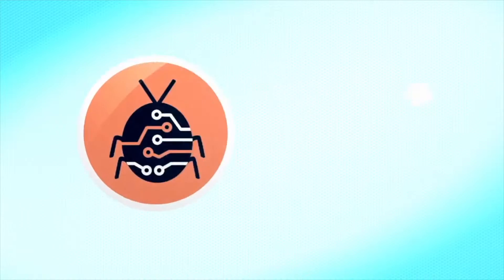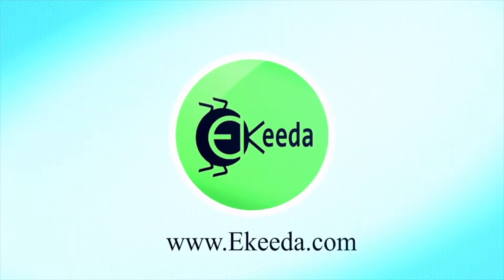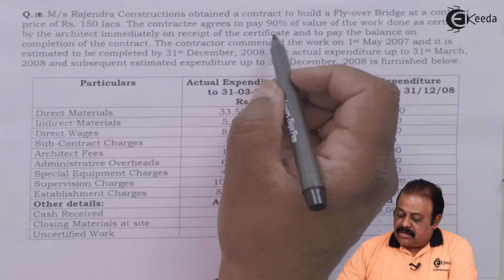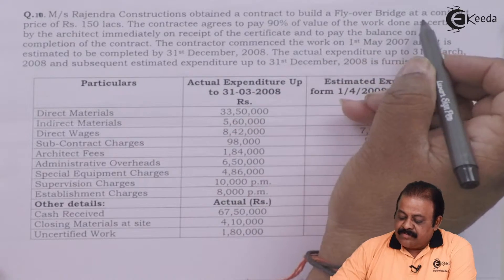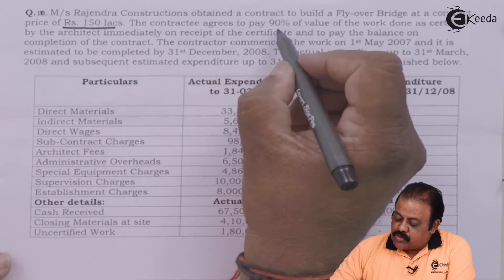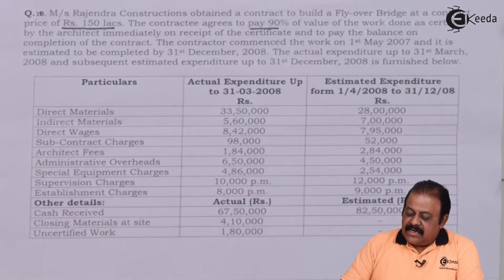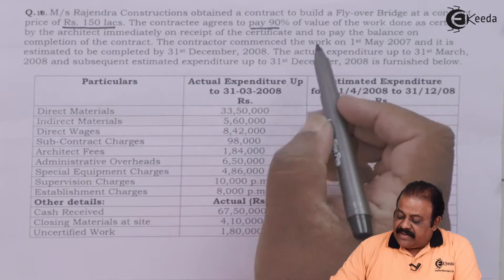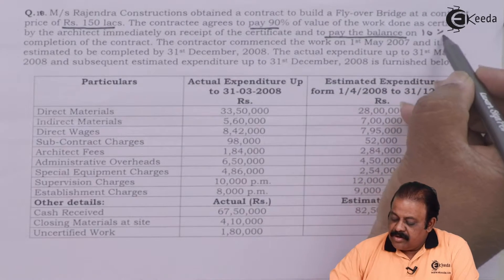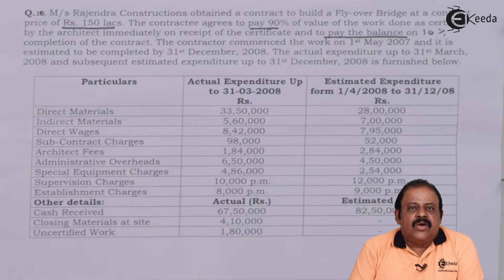Let us start with the question. Rajendra Construction obtained a contract to build a flyover or bridge at a contract price of 150 lakhs. The contract agrees to pay 90% of the value of work done as certified by the architect immediately on receipt of certificate, and to pay the balance of 10% on completion of the contract. So cash received will be 90% of work certified.